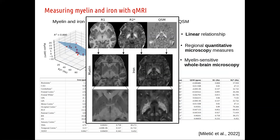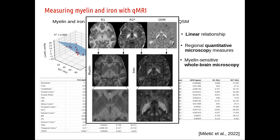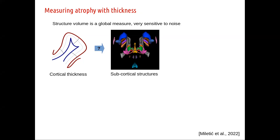When we fit those models to our data, the iron and myelin quantities match quite well what the literature and stain measurements have given us. The images are fairly similar to the original ones, but on the myelin map you can appreciate how the globus pallidus really comes into view as a gray matter structure — because the iron has been separated out in that map.